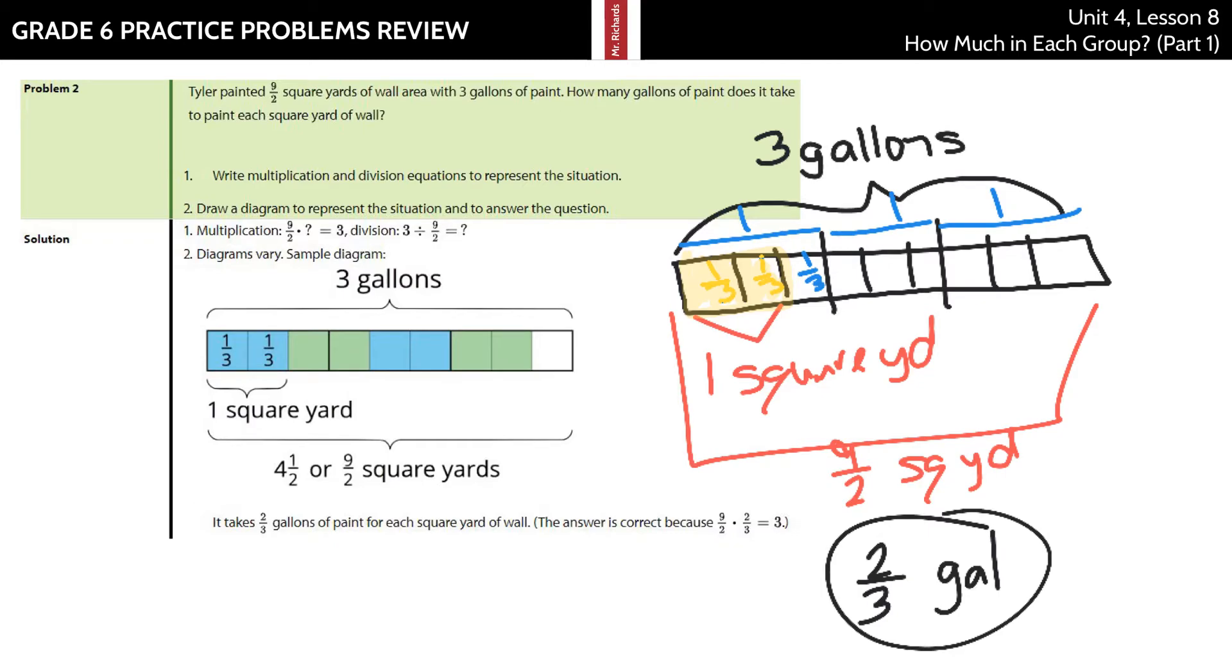Now, the multiplication and division question part of this, we can say, well, I took three and I divided it into nine-halves. And what does that equal? Or we can take our nine-halves and multiply by the what, and that was equal to three. And, of course, that what we found out was two-thirds.